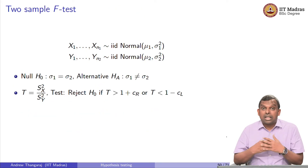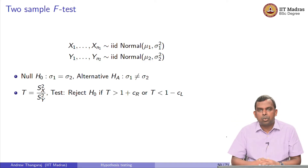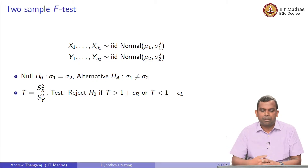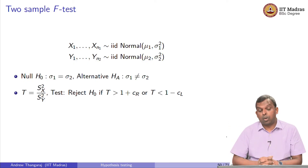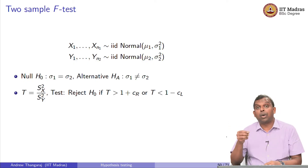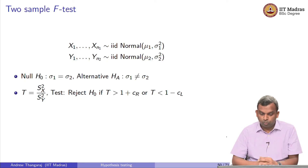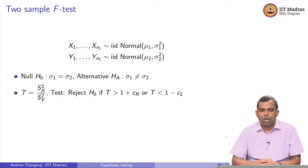We will now see the two-sample F test. This is a test for variances, similar to what we did for means with the two-sample Z test. You again have two independent IID samples, one from each normal distribution. The null hypothesis is sigma 1 equals sigma 2 — the variances are the same. The alternative hypothesis is sigma 1 is not equal to sigma 2.